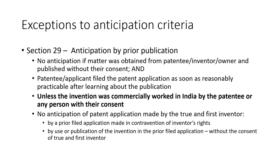Section 29 takes care of a situation where the invention was taken from the patentee or inventor without their consent and published. If the applicant filed the patent application as soon as they came to know about the publication that happened without their consent, it won't be considered anticipation. However, the proviso says the invention should not have been commercially worked in India by the patentee or any authorized person — if it was commercially worked, it would be considered anticipation.